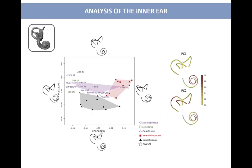First, we used that method to quantify shape variation using the entire inner ear. What we could see is that the inner ear of Littlefoot seems to be similar to other Australopithecus specimens, but it seems to be much closer in particular to one specimen — the Jacovec specimen, the Jacovec cranium — that was found at Sterkfontein, the same locality as Littlefoot, but in deposits that are potentially older or at least the same age. The inner ears from the two specimens look very similar, which was very interesting for us.